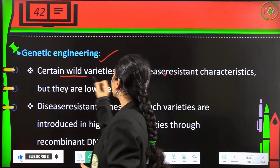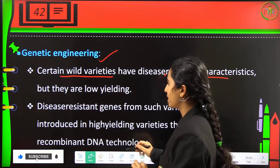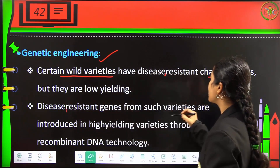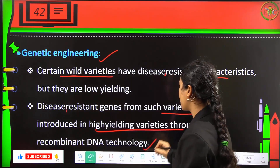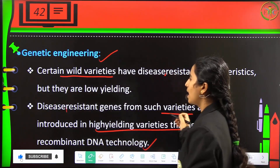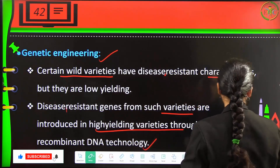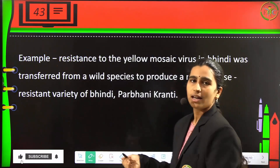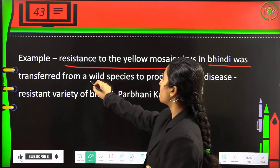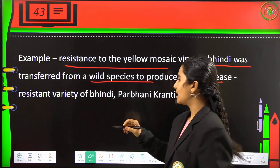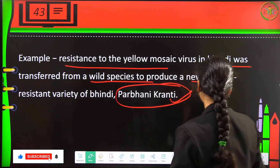In genetic engineering, certain wild varieties have disease-resistant characteristics but very low yielding capability. Disease-resistant genes from such varieties are introduced into highly yielding varieties through recombinant DNA technology (RDT). Low-yielding high-resistant breeds are introduced to high-yielding less-resistant breeds so that they produce more-yielding resistant breeds. For example, resistance to yellow mosaic virus in bhindi was transferred from a wild species to produce the new disease-resistant variety Parbhani Kranti — bhindi is lady's finger.